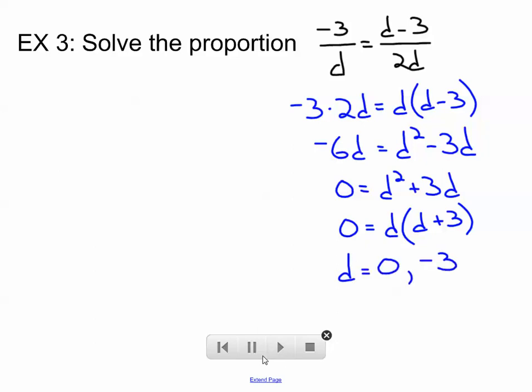However, we do have an issue here, and that is that if we plug these solutions back in, if we plug 0 back in for D right here, we'll have 0 on the bottom of a fraction. And you can't divide by 0. That's an undefined procedure. So 0 is what we would refer to as an extraneous solution. It might be a solution to this equation, but it is not a solution to the original proportion, and that's what we're trying to solve. So negative 3 is actually the only solution to this particular one.